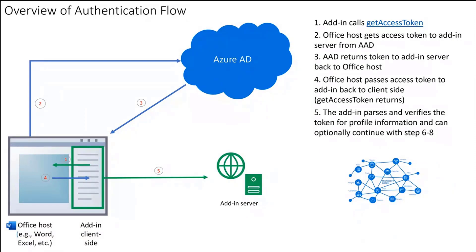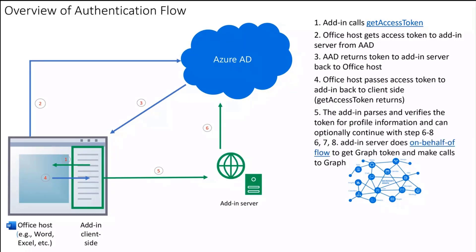They've consented already at this point, or an admin has consented, so that's taken care of. The client side can pass it back to the server for validation, and you can use that information to store data on your server side. Or you can continue on with steps six through eight, which show how to get Graph data — you exchange that token using the On Behalf Of Flow to get a Graph token and make calls to the Graph. You literally just make another call on your server side to exchange that token and get access to the Graph.